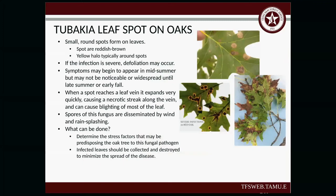Leaf spot on oaks — you'll see small round, reddish-brown spots form on the leaves with a yellow halo around the dark spot. Symptoms may begin to appear in mid-summer but are not normally noticeable or widespread until late summer or early fall. When the spot reaches a leaf vein it expands pretty rapidly and can take over the leaf. Spores of this fungus are spread by wind and rain splashing. To address it, remove the infected leaves, break them up, and destroy them — you'd be surprised how often that's all you really need to do.